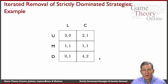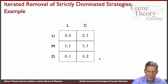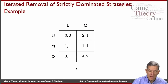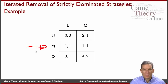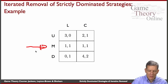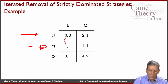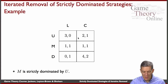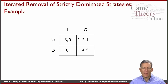Now let's iterate on that logic. There's no longer strict domination for the column player, because the column player is actually indifferent between left and center if the other player plays middle. But one thing we do notice is that the middle strategy of the row player is now dominated — the middle strategy does strictly worse than the up strategy. Three is better than one, two is better than one — no matter what happens, you're better off playing up than middle. So M is strictly dominated by U; we can get rid of M, collapsing the game further.